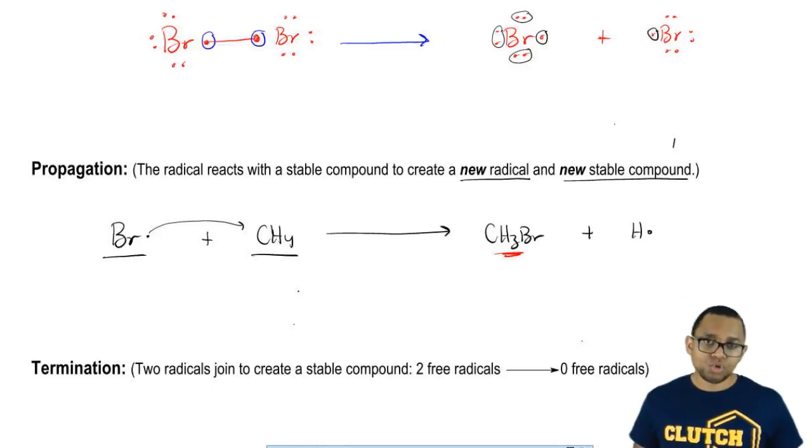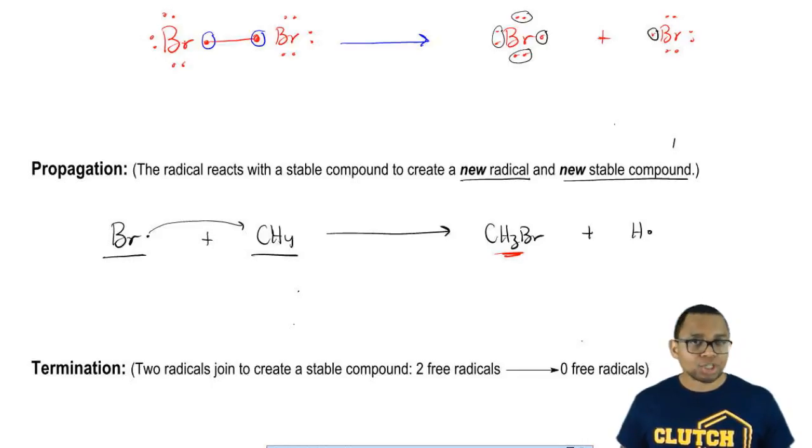We can say that this happens multiple times until every single hydrogen would be replaced with a Br. Now, it's hard to do this and usually we just do one monohalogenation. We just usually replace one hydrogen with one halogen.